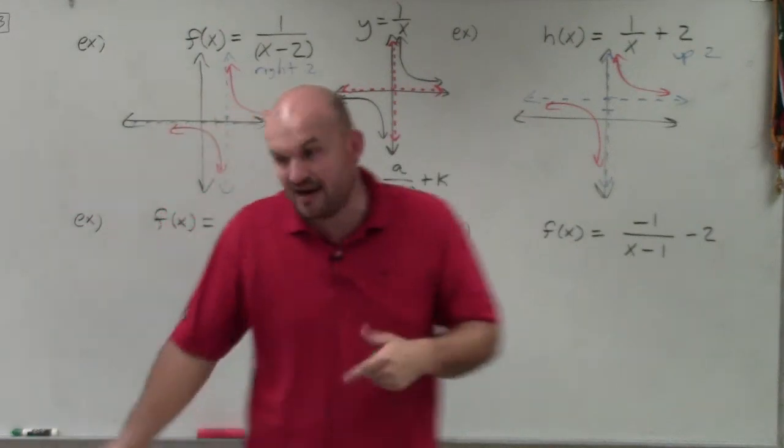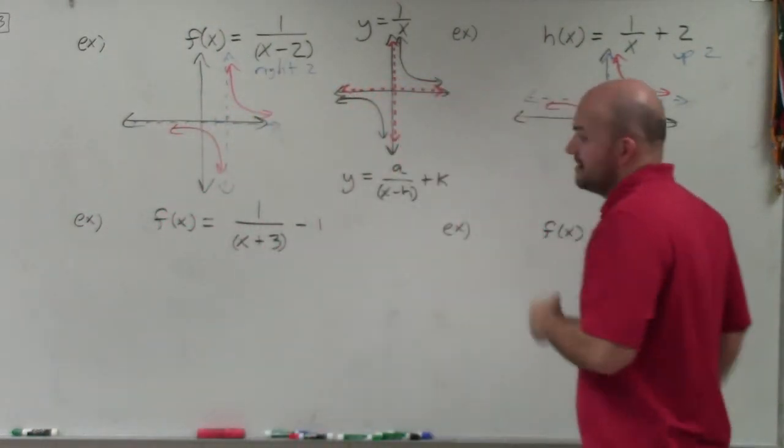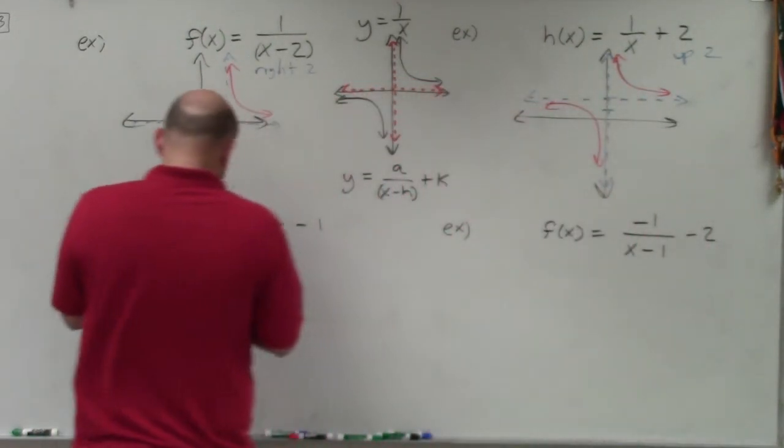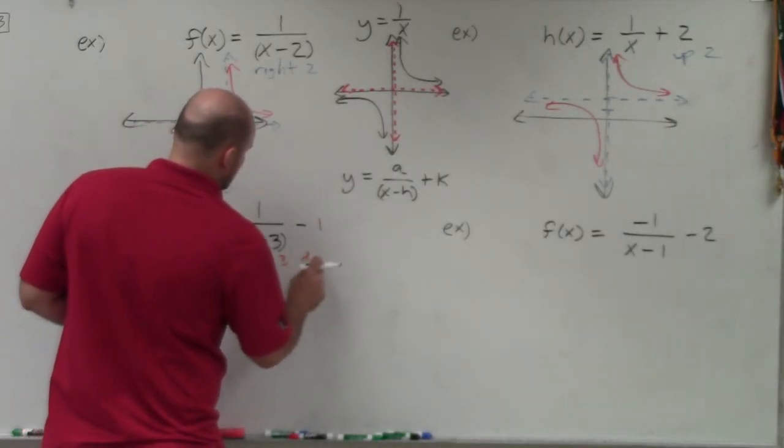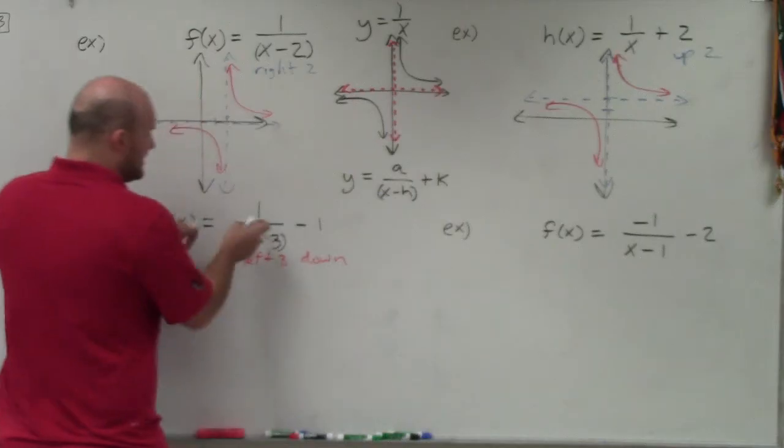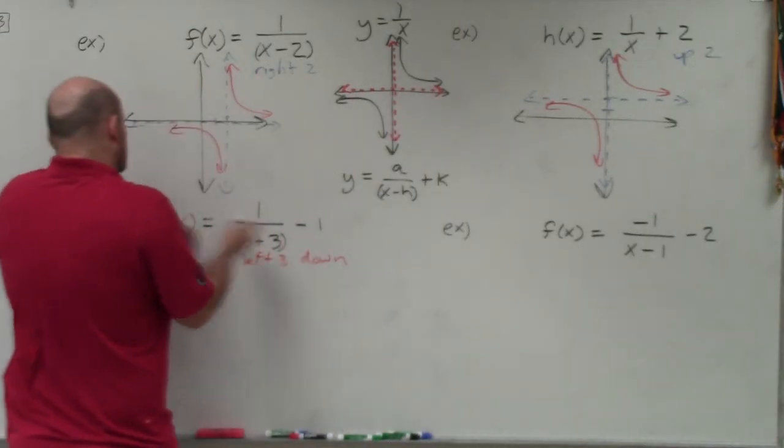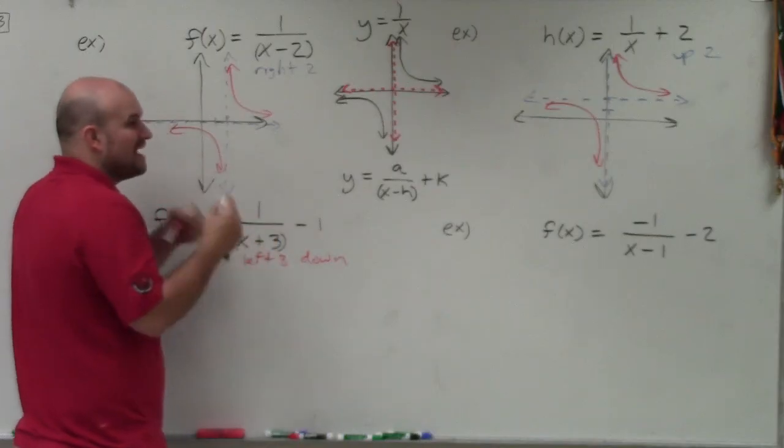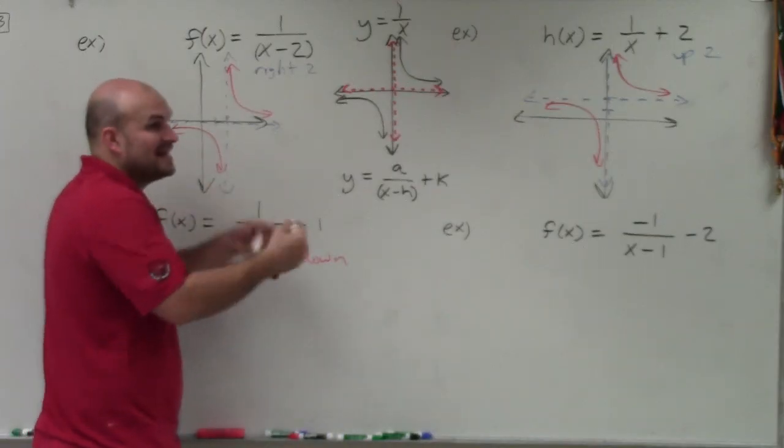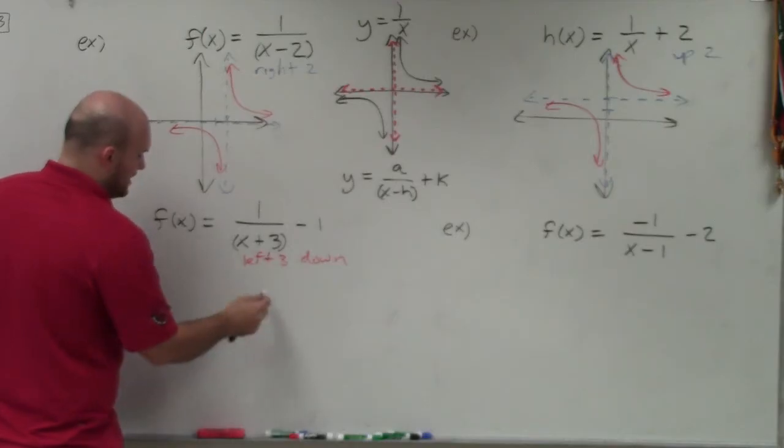So now we have multiple transformations. Now I have x plus 3 and x minus 1. So now that's going to tell me to go left 3 and down 1. Again, remember, it's the opposite. If it's x plus 3, you're actually going to the left. Because this can be written as x minus the negative 3. So x minus h, x minus negative 3. So therefore, negative 3 tells you to go to the left.